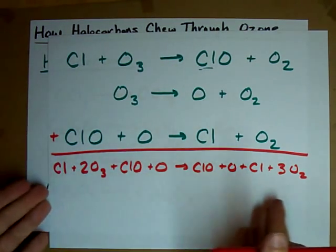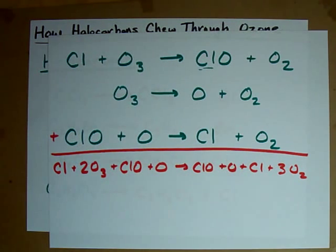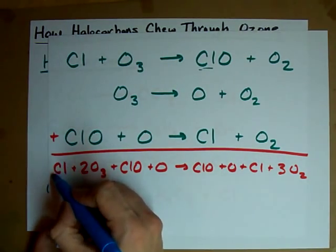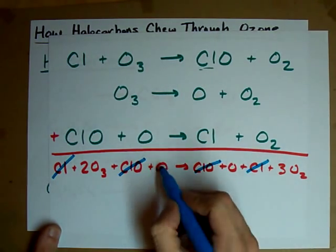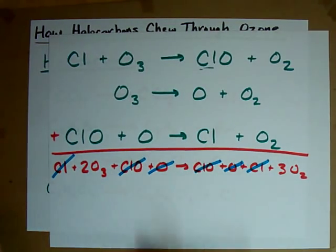This is your overall reaction, your total reaction, if you prefer. And what you'll notice is, remember, if you have something on both sides of an equation, you can cancel them out. There's a Cl on both sides, there's a ClO on both sides, and there's an O on both sides.